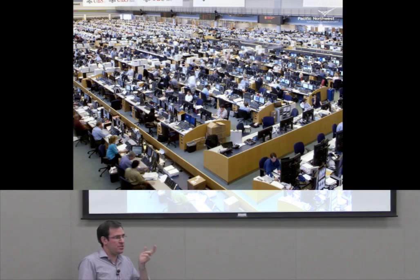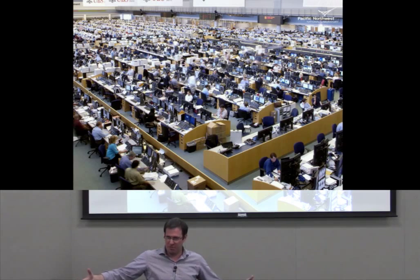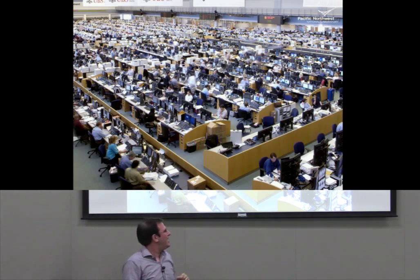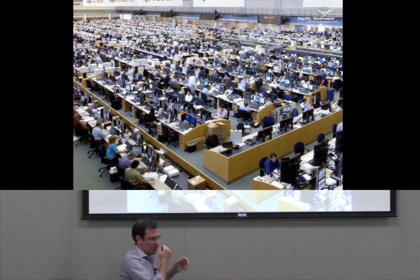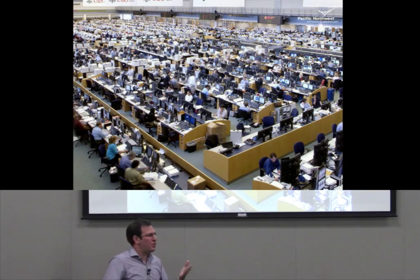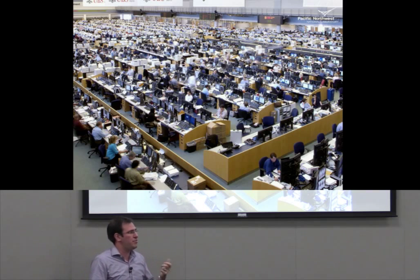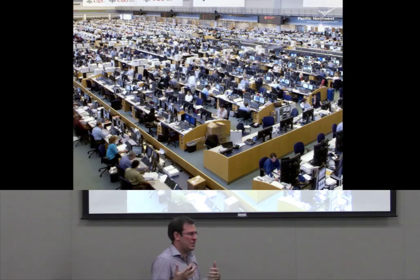In a lot of cases we paralyze the problem with people. This is actually the UBS trading floor in Connecticut. The financial services industry is probably the only industry in the world that can afford to paralyze problems with people. Most of us, whether we're doing scientific or threat discovery, can't afford to throw 30,000 smart brains at the problem. What a lot of these folks are actually doing is steering trading algorithms. The financial services world has recognized that in order to keep up with the pace of change, trading decisions have to be made by systems, but people have to observe the global patterns those algorithms are making in order to tune them and respond to things the algorithm can't tell, like sentiment or mood.